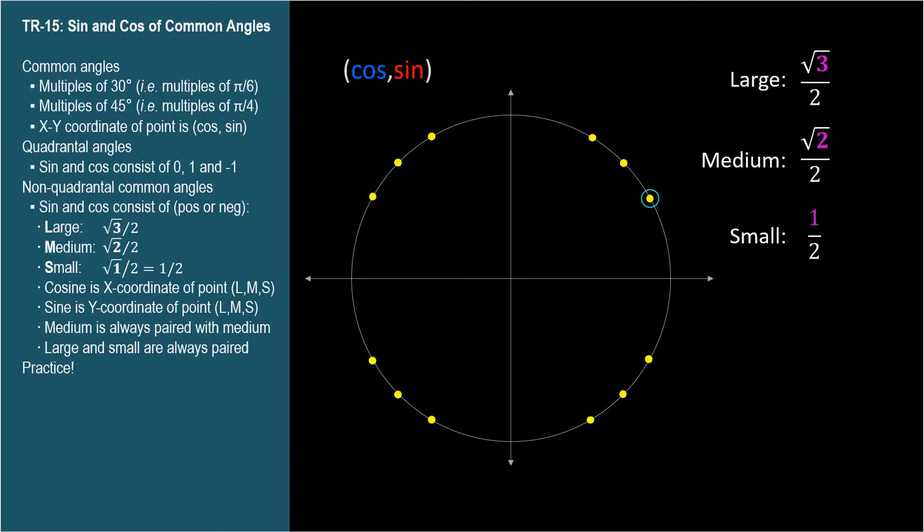So what's this angle, and what are the cosine and sine? It's thirty degrees. The coordinates of the point are positive large, positive small, so square root of three over two, comma, one half. The x-coordinate, blue, is the cosine, and the y-coordinate, red, is the sine.